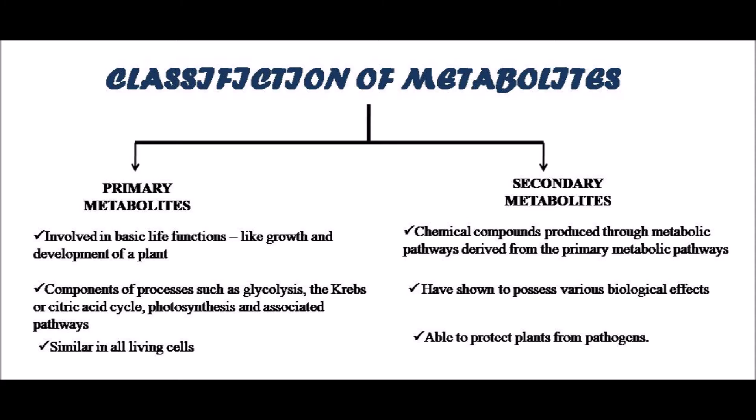Primary metabolites are obtained as components of processes such as glycolysis, the Krebs cycle, photosynthesis, and associated pathways. On the other hand, secondary plant metabolites are products of subsidiary pathways and they are involved in plant defense. Majorly, the medicinal effect of herbals is oriented towards the SPMs — secondary plant metabolites.